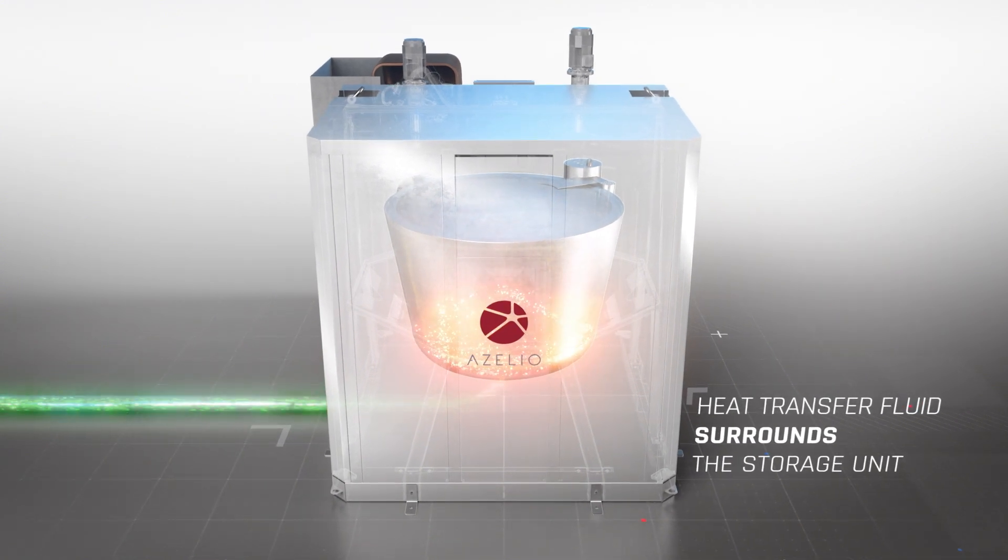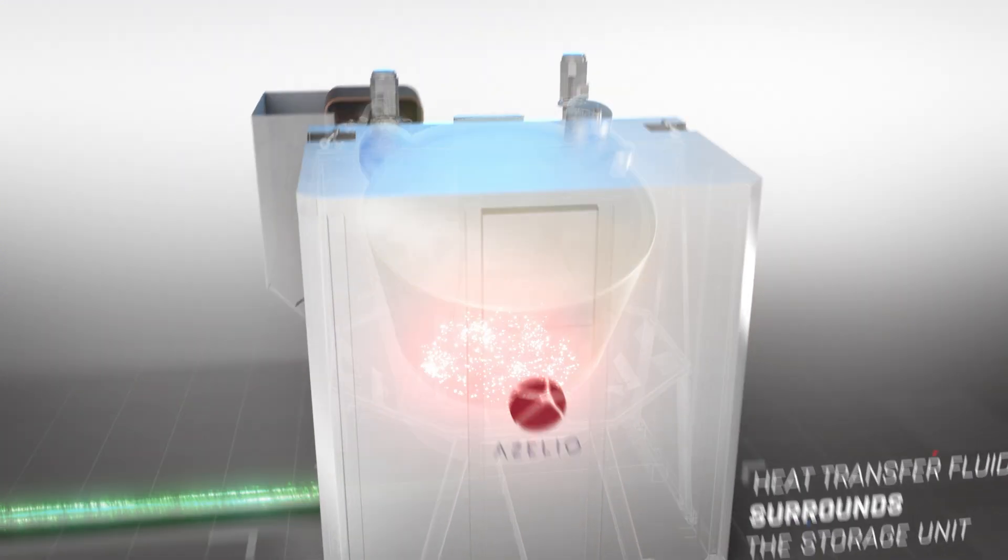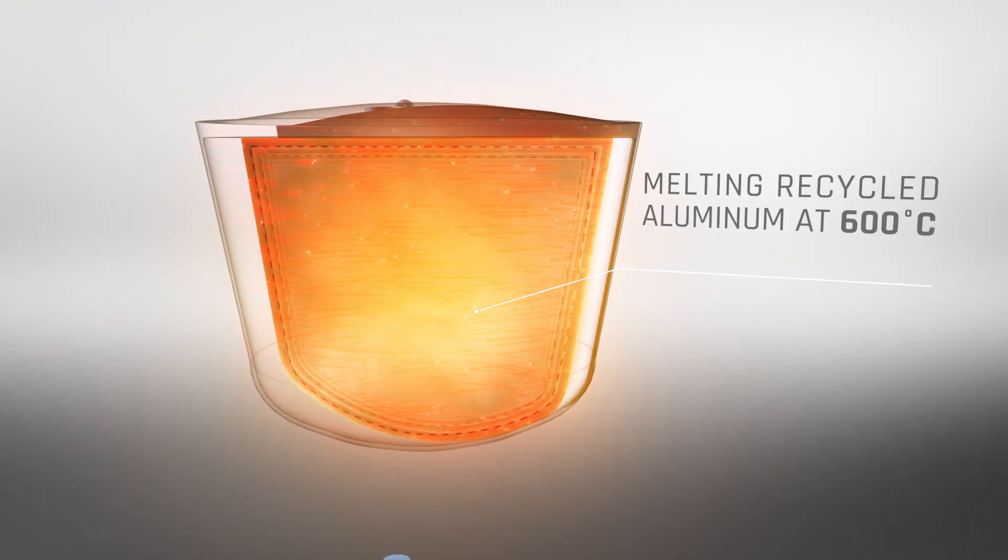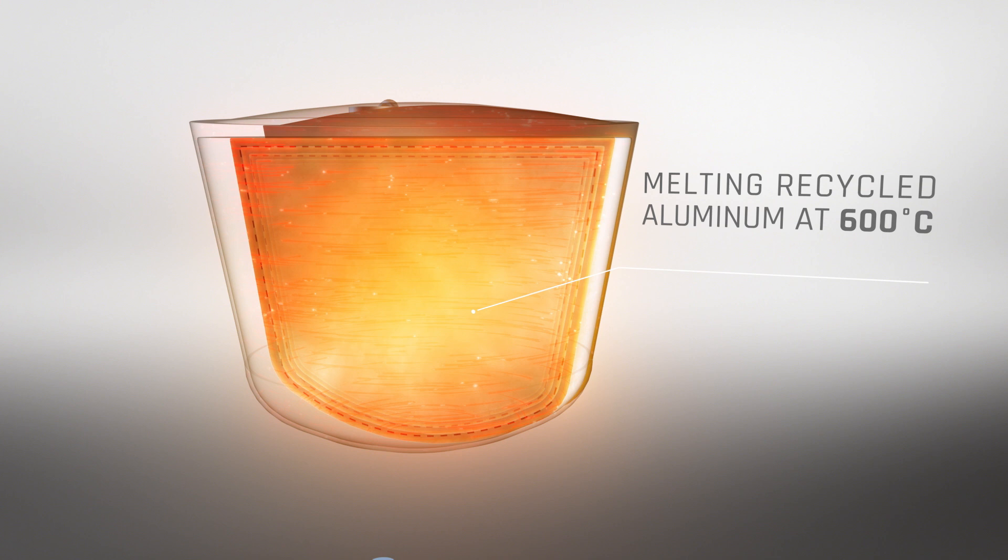A heat transfer fluid is driven around the storage unit, melting a recycled aluminum alloy at 600 degrees Celsius. The phase change from solid to liquid in the storage unit can harness the heat for a longer period of time.